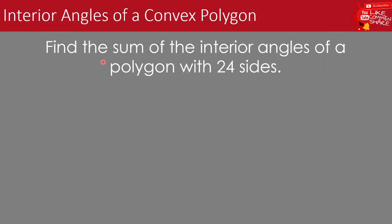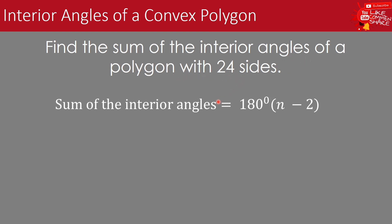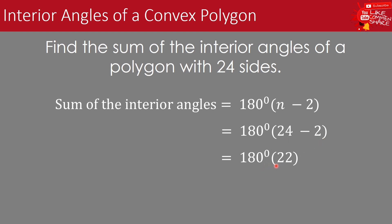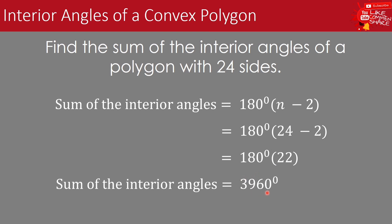Find the sum of the interior angles of a polygon with 24 sides. We use the formula: sum of interior angles equals 180 degrees times the quantity of n minus 2, where n is the number of sides. We substitute n with 24: 180 degrees times the quantity of 24 minus 2. Simplifying: 24 minus 2 equals 22, and 180 degrees times 22 equals 3,960 degrees. Therefore, the sum of the interior angles of a polygon with 24 sides is 3,960 degrees.